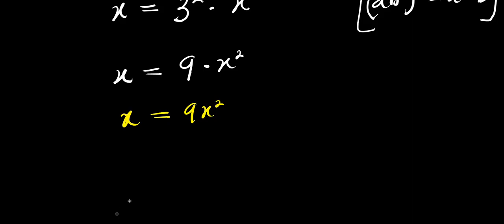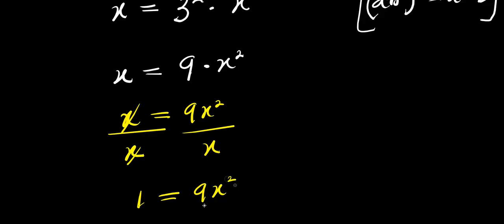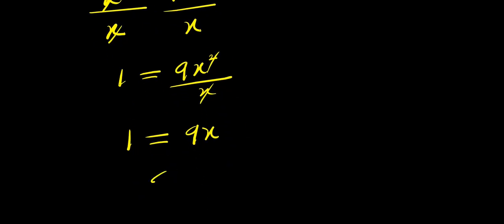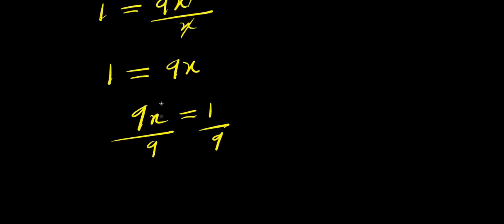At this point I can decide to divide both sides by x. The x cancels, giving 1 equals 9x squared divided by x, which simplifies to 1 equals 9x. Rearranging, 9x equals 1, then divide both sides by 9, and we get x equals 1 over 9.